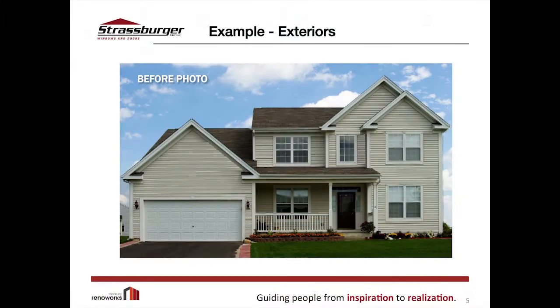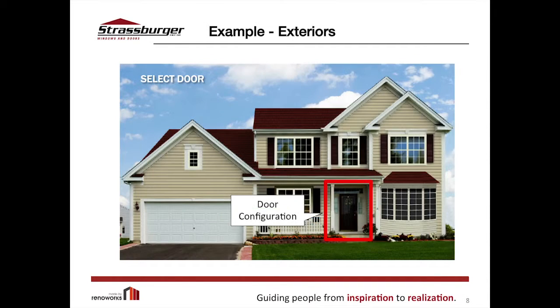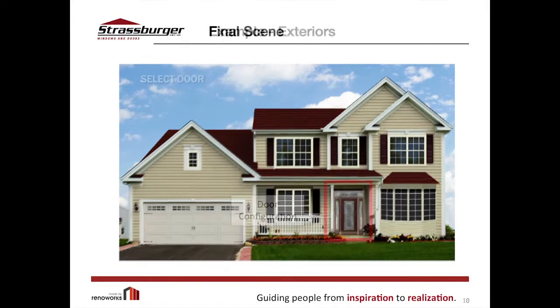We choose from the product manufacturer library, take the photo of the home, and configure the door or window. We're not just taking photos of your library — we're actually adjusting the size, the shape, grill patterns, colors, wood grains. Everything about that library is configurable, and then we show what it looks like in the home.